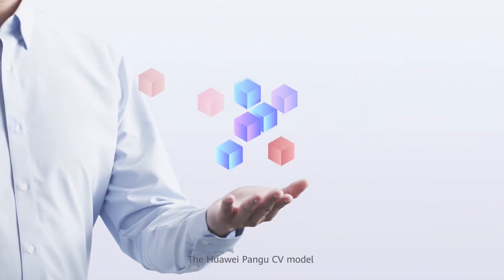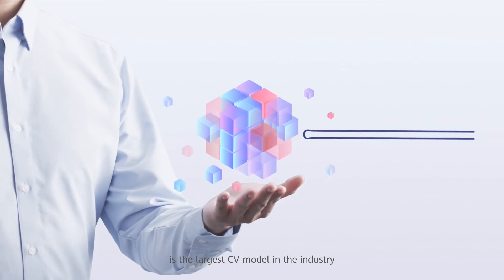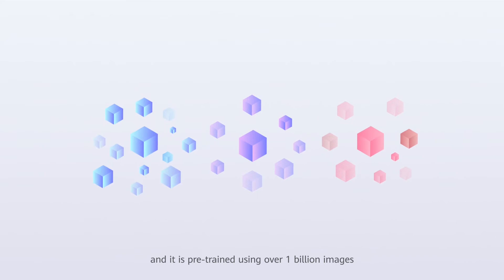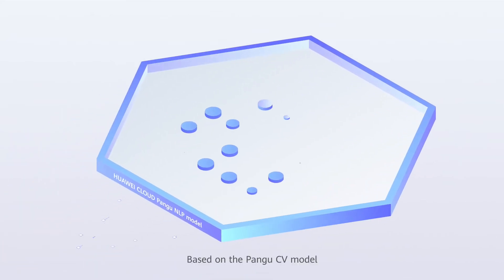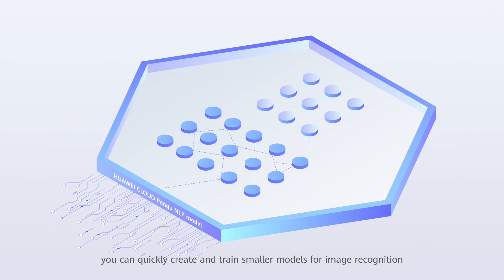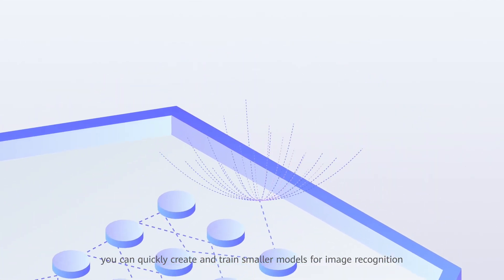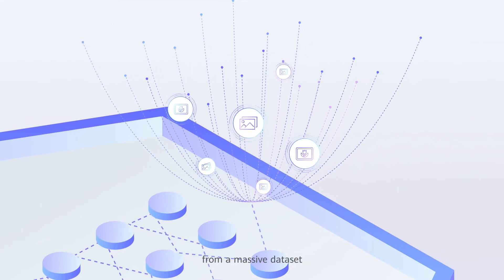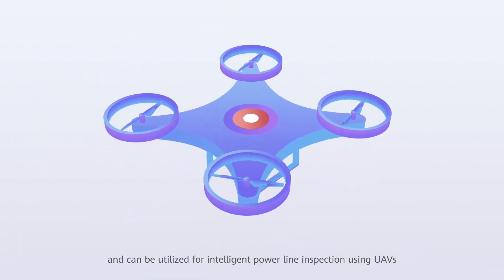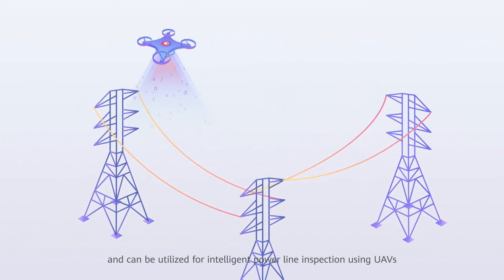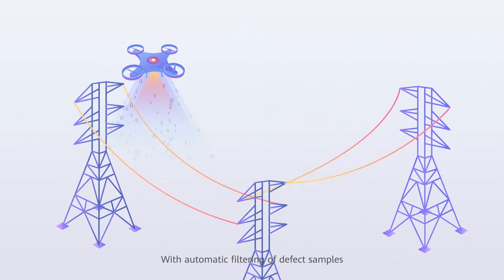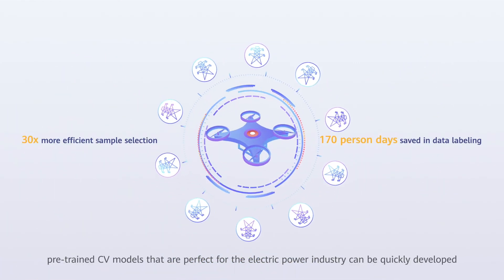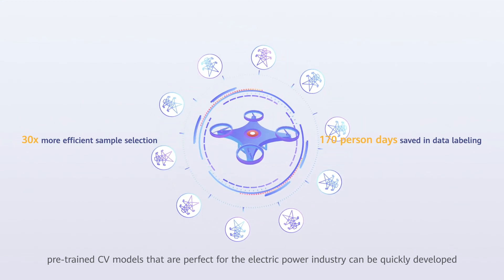The Huawei Pangu CV model is the largest CV model in the industry with over 3 billion parameters, and it is pre-trained using over 1 billion images. Based on the Pangu CV model, you can quickly create and train smaller models for image recognition. It can accurately recognize various types of images from a massive dataset and can be utilized for intelligent powerline inspection using UAVs. With automatic filtering of defect samples and efficient data labeling, pre-trained CV models that are perfect for the electropower industry can be quickly developed.